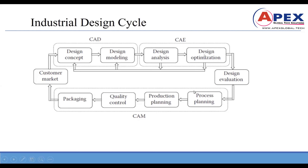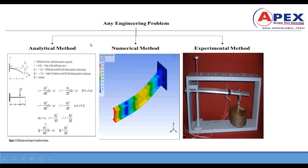Once we evaluate, we go for process planning — how to manufacture, how to maintain quality, how to bring the product to market. Then we go for production, quality check, packaging, and finally the product goes to the customer. Based on customer feedback, the same design cycle can be repeated to improve the product. In the internship, we will cover from design through optimization.